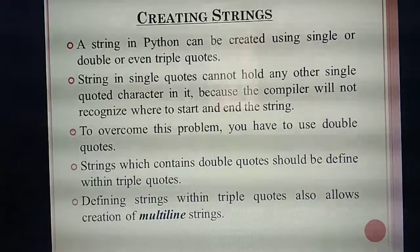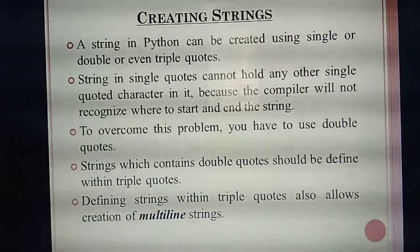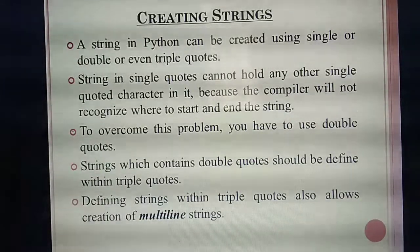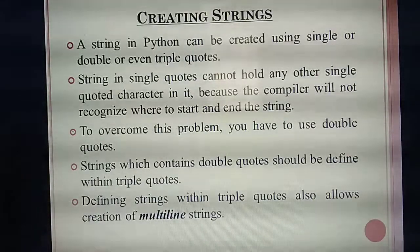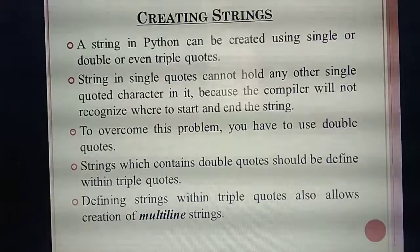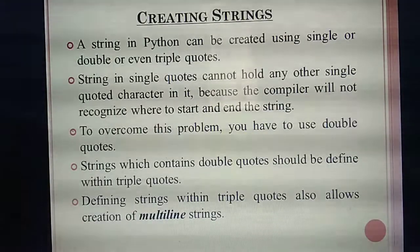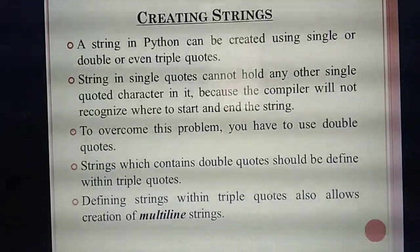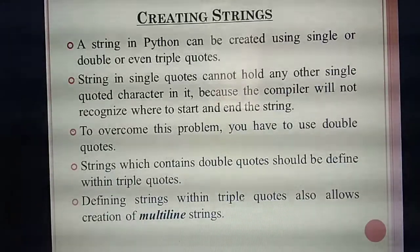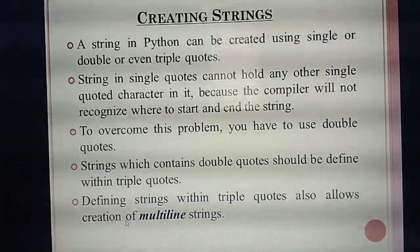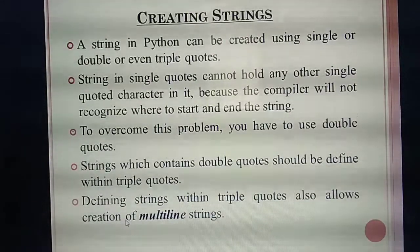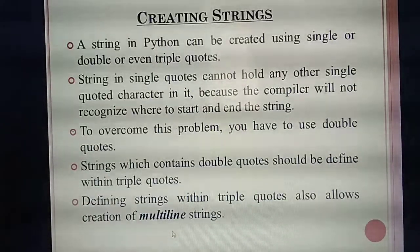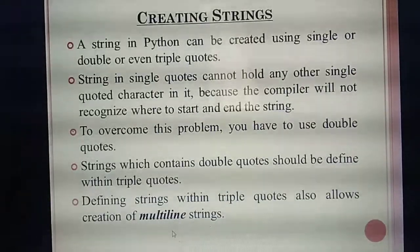When you define a paragraph of three or four lines, you use triple quotes. The format for triple quotes: you define the particular thing in double quotes first, then give triple quotes outside. This is very important. Strings defined in triple quotes are called multi-line strings.